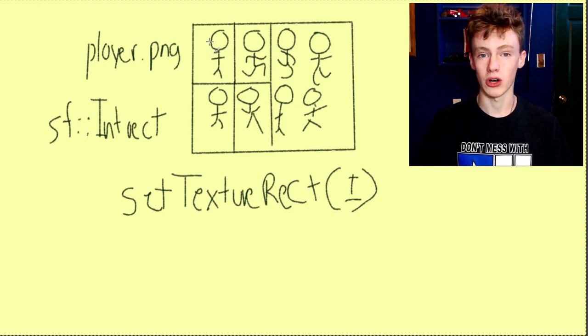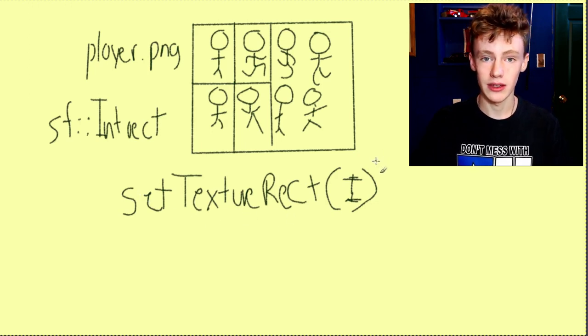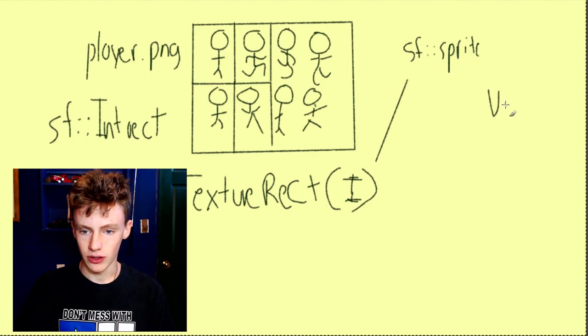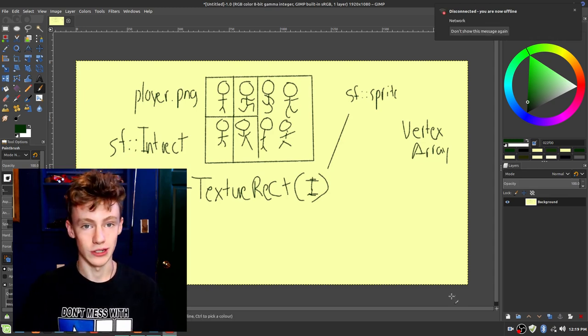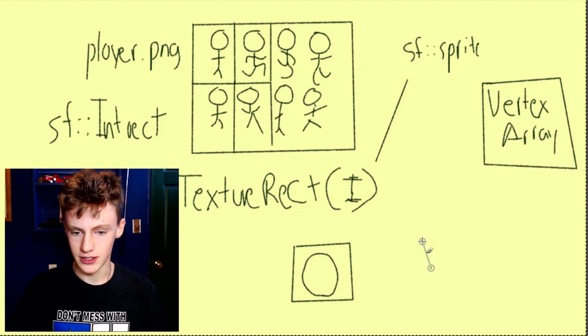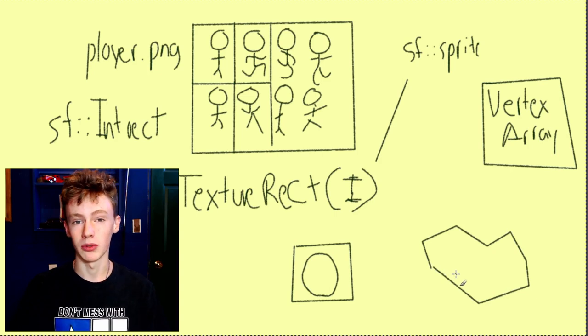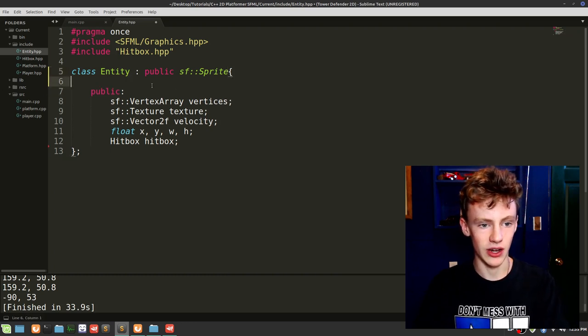setTextureRect sets the viewable portion of our texture to a certain region, so if we were viewing a particular frame of animation it would limit the visible portion of the entire texture to just that frame. However, we don't currently have setTextureRect because we had switched to using vertex arrays and essentially creating our own sprite class. We essentially have two ways of creating sprites — we're going to go with the SFML sprite class, since we don't really need a vertex array unless we had an entity with a non-fixed shape, like a blob of goo where you'd want to manipulate the vertices.